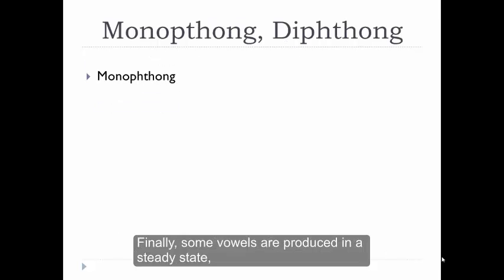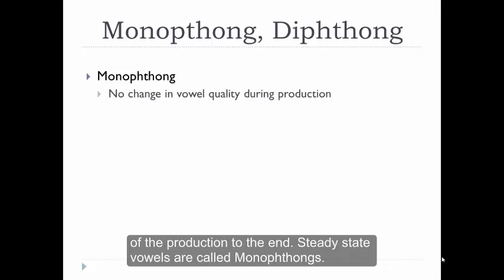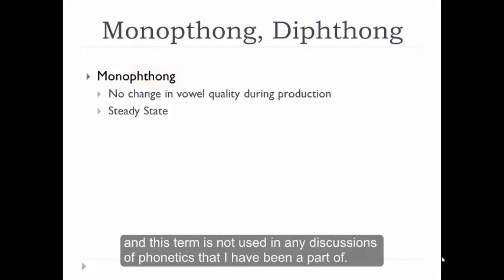Finally, some vowels are produced in a steady state while others have a change during their production. In steady state vowels, there is no change in the vowel's quality from the beginning of the production to the end. Steady state vowels are called monophthongs. I suppose this means that there is one phthong, but I'll be honest and say that I have no idea what a phthong is, and this term isn't used in any discussions of phonetics that I've been a part of.